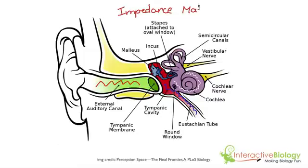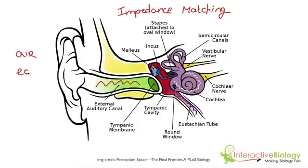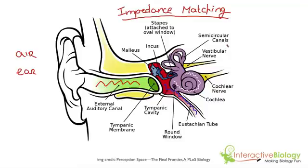Impedance matching. Impedance is basically resistance. And we're trying to match the amount of resistance here to the amount of resistance here. We want the same signal in the fluid in the cochlea that we have in the air inside the outer ear. What we're basically saying is: when the signal comes here and causes the tympanic membrane to vibrate, we want the signal to be transferred with the same amount of strength to that fluid inside the cochlea.